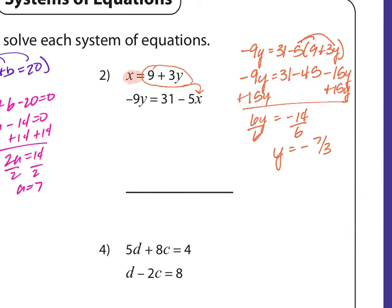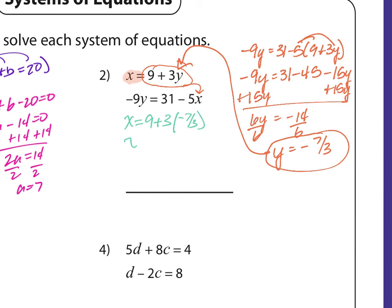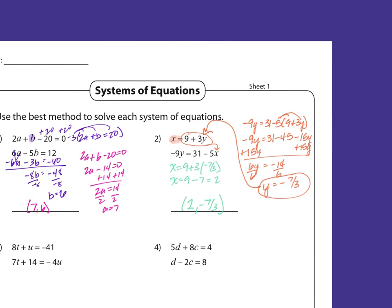Now I'm going to substitute that back in to find x. So x equals 9 plus 3 times y, and y is negative 7 thirds. That gives x equals 9 minus 7, which is 2. So the ordered pair is (2, negative 7 thirds). Any questions?